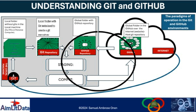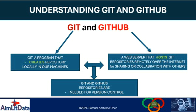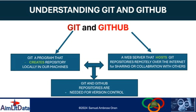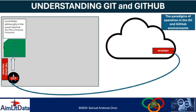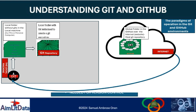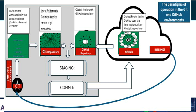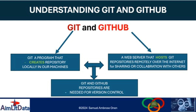If you want to use GitHub, you can go to the GitHub website, open your GitHub account, and then create a GitHub repository there. So the difference between the two: Git is a program to create repositories; GitHub is a web host for Git repositories. Git and GitHub repositories are both needed for version control.